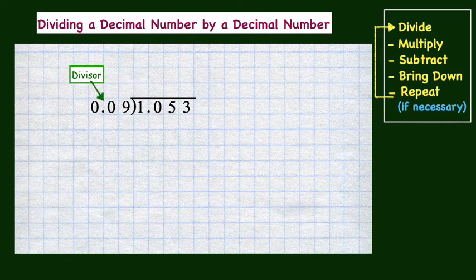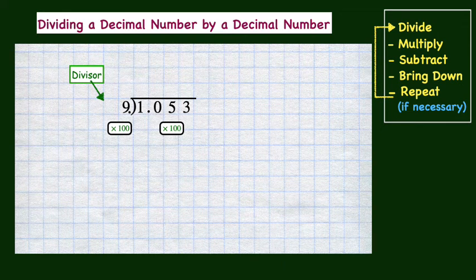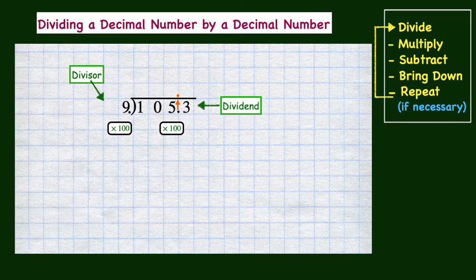Here again, we have a divisor that is a decimal number. I want to show you this problem because it is important for you to see that just because the divisor must be a whole number, the dividend does not. This time, our divisor has two decimal digits, and in order for us to convert it to a whole number, we need to multiply it by 100 so that the decimal point will move two places to the right to create the whole number 9. And don't forget, to keep this expression balanced, we need to multiply the dividend by 100, moving its decimal point two places to the right as well. The last step before we begin the division process is to move the decimal point from the dividend up to the quotient. Do you see that the dividend is not a whole number, but the divisor is? As long as the divisor is a whole number, it doesn't matter whether the dividend is a whole number or not.